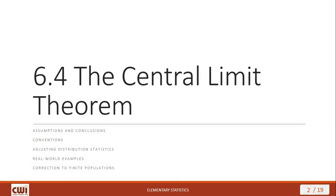In this lecture, we're going to talk about some assumptions that we make with the Central Limit Theorem, as well as the conclusions it allows us to make. We'll talk about conventions about how the Central Limit Theorem is typically used, and then we'll look at adjusting distribution statistics because of the Central Limit Theorem, and then we'll get into some real-world examples. We'll finish the lecture talking about the correction that we need to make to finite populations.